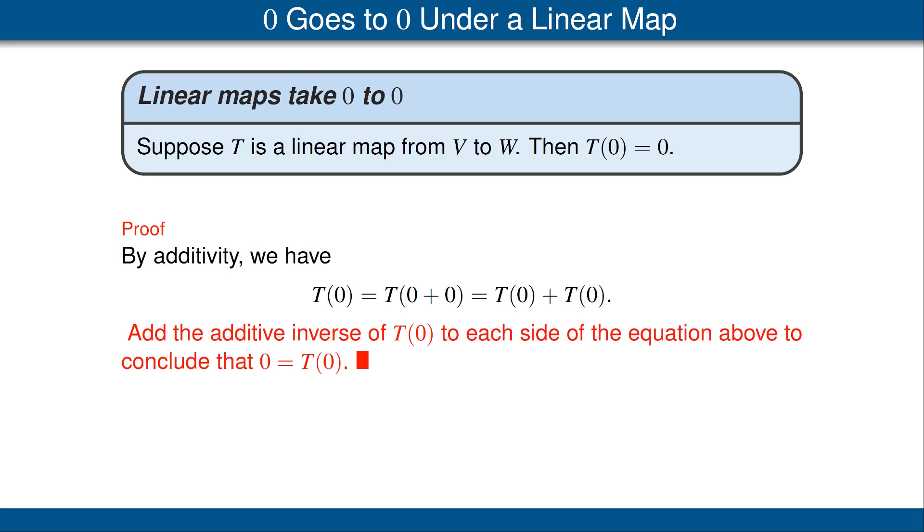However, if we think of R as a one-dimensional vector space, and again define f(x) equal mx plus b, then it's easy to see that that function f is linear in the sense of linear maps on vector spaces if and only if b is equal to 0. In other words, f(x) is equal to mx is a linear map, but f(x) equals mx plus 4 is not a linear map. For f to be linear in the sense of vector spaces, we must have f(0) equals 0. But if f(x) equals mx plus 4, then f(0) equals 4, and thus that particular f is not linear in the sense of vector spaces.